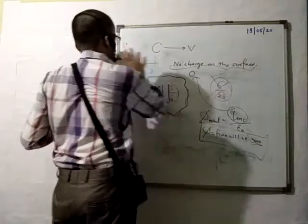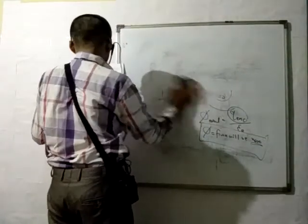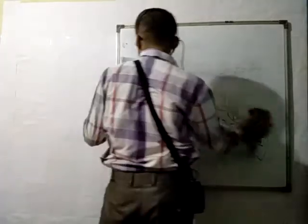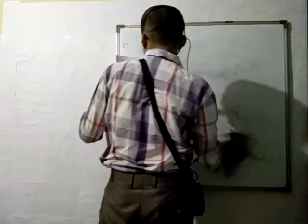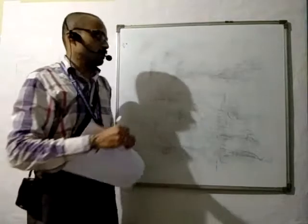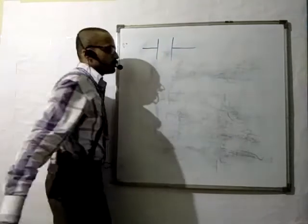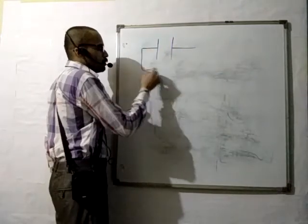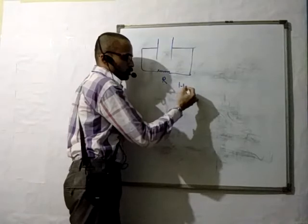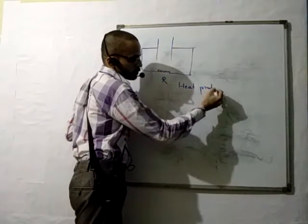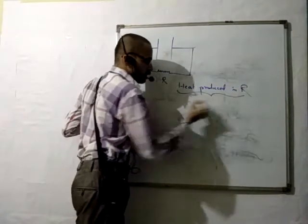Let's go for the next problem. A 4 microfarad capacitor is charged to 400 volts. If its plates are joined through a resistance of 2 kilo-ohm, then the heat produced in the resistance will be equal to the energy stored in the capacitor.